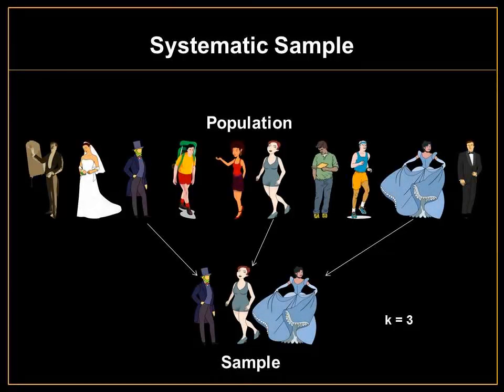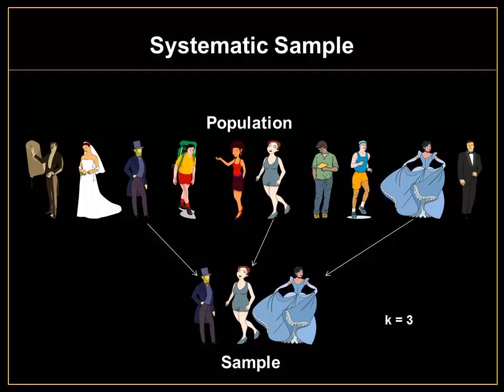The third type of sampling technique is referred to as a systematic sample. With a systematic sample, every kth subject is selected to be part of the sample. k can represent any number, so for this example, we're interested in every third subject. We count every third subject in the population, and those individuals would be a part of the sample.